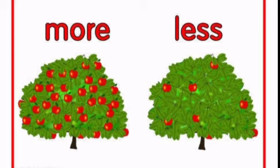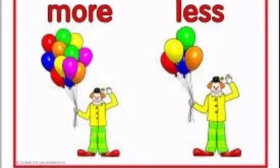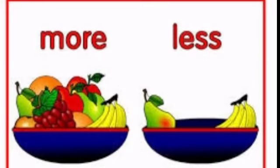Now observe the second picture. What do you observe? Only few apples are there — that means less. L-E-S-S. Now observe the second picture: there is a joker. The first person holds more balloons, and the second one holds less balloons. Like this, you can observe more and less. In the third picture, you observe fruits. First one is more, second one is less.